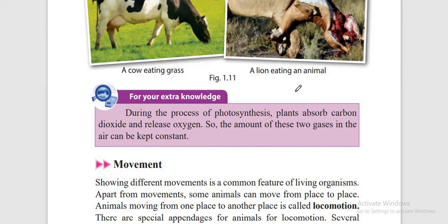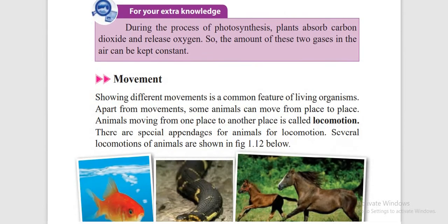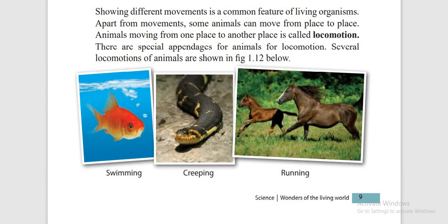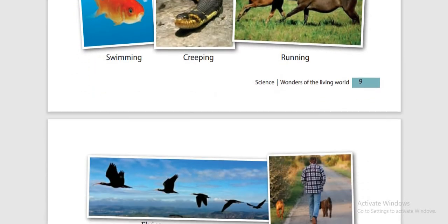Next is movement. Movement can be classified into different types such as locomotion and movement in plants. The type of movement you should study is locomotion — animals moving from one place to another is called locomotion. Fish show locomotion by swimming, snakes by creeping, horses by running, birds by flying and humans by walking.